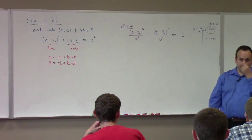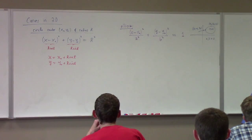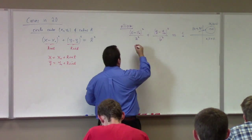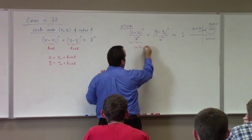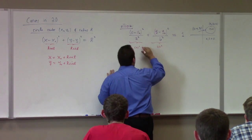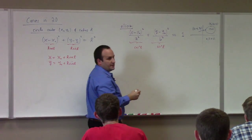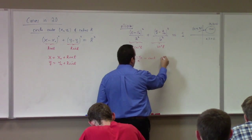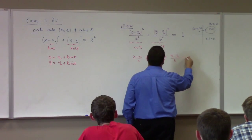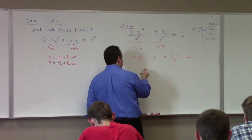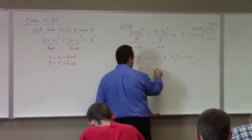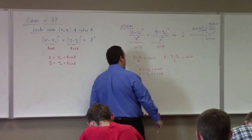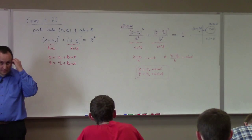How would you parametrize the ellipse? Think of x minus x-naught over A as cosine t, and y minus y-naught over B as sine t. That suggests: x equals x-naught plus A cosine t, and y equals y-naught plus B sine t. Those are the parametric equations for an ellipse centered at x-naught, y-naught.